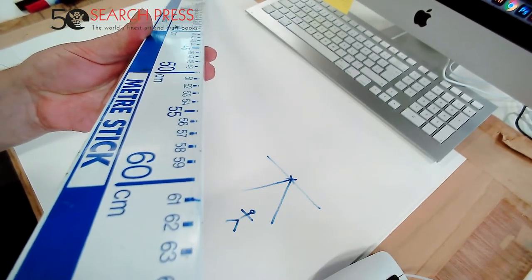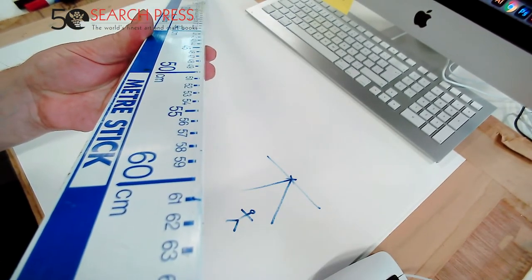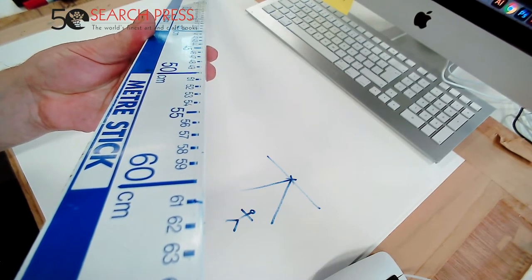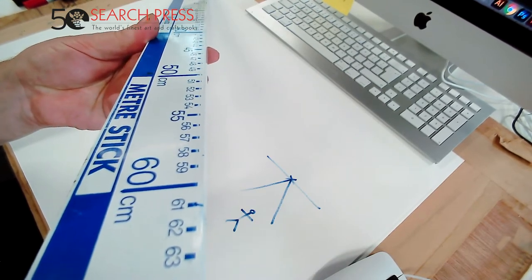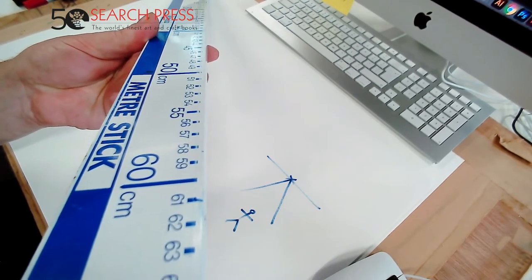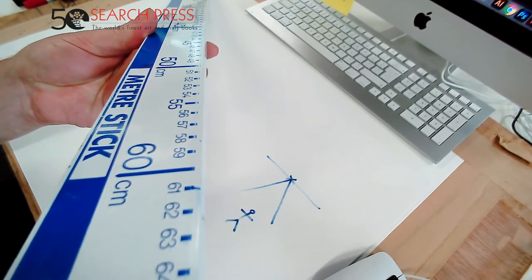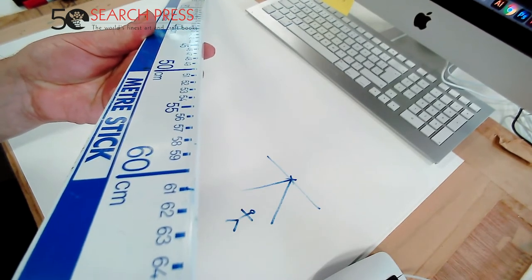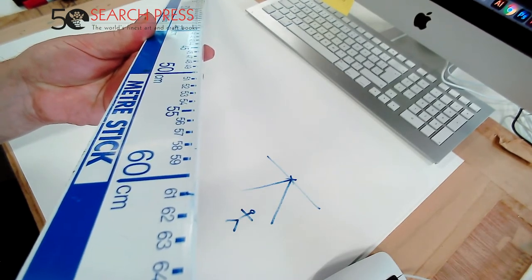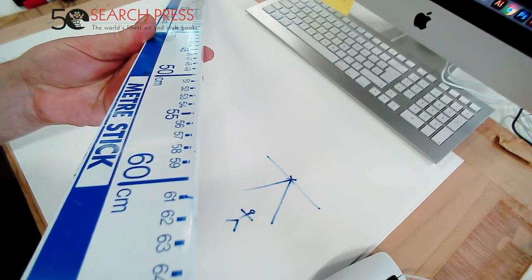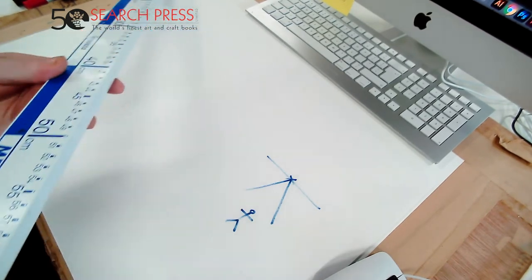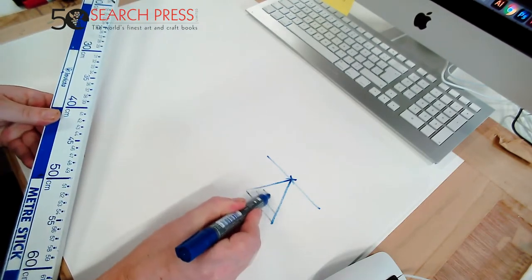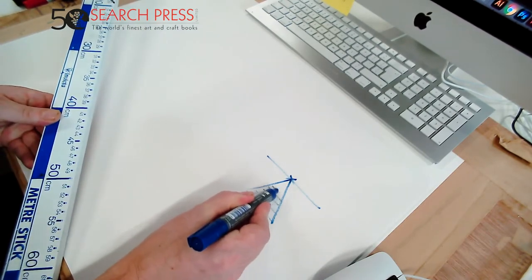As we go down along the ruler, it's smaller in the distance and closer when it's nearer to you. There's also another effect: the gaps between the numbers get smaller and tinier as it goes away from you. Those are the two main principles we'll be dealing with today.